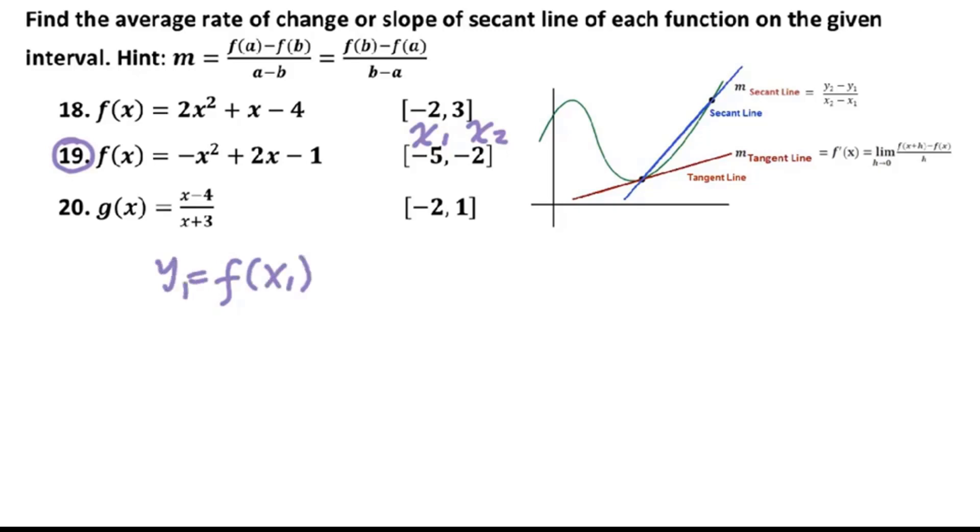We plug f of negative 5 into the function. That's negative 5 squared plus 2 times negative 5 minus 1. So we got negative 5 squared, that's 25. That's negative 25 minus 10 minus 1. That is negative 36.